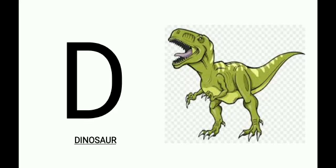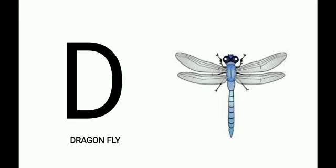Dinosaur. What is it children? Dinosaur. Dragonfly can be seen around lakes, ponds and wetlands. What is its name children? Dragonfly. Yeh humko gardens mein bhi dekhne ko milta hai, okay?